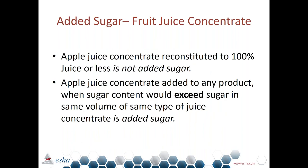Basically, if I took apple juice concentrate and reconstituted it to 100% apple juice or less, that would not be considered using it as an added sugar. However, if I took that apple juice concentrate and added it to any product where the sugar content exceeds the sugar of the same volume of the same type of single-strength juice, that excess would be considered added sugar. Anything above what would be found in 100% fruit juice is the added sugar we are trying to calculate and document.